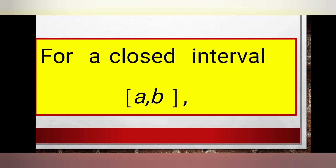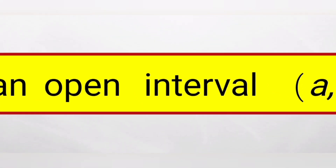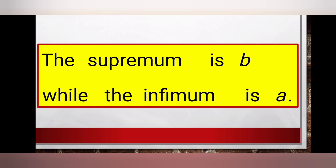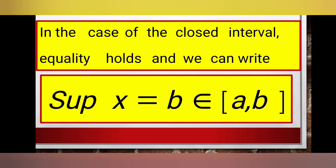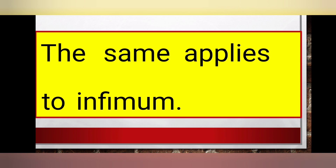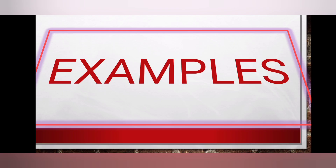For a closed interval [a, b] or an open interval (a, b), the supremum of E is equal to b. In the case of the closed interval, equality holds and we can write supremum of x equals b, where b belongs to the interval [a, b]. For the open interval, supremum of x equals b, where b does not belong to the interval (a, b). The same applies to infimum.